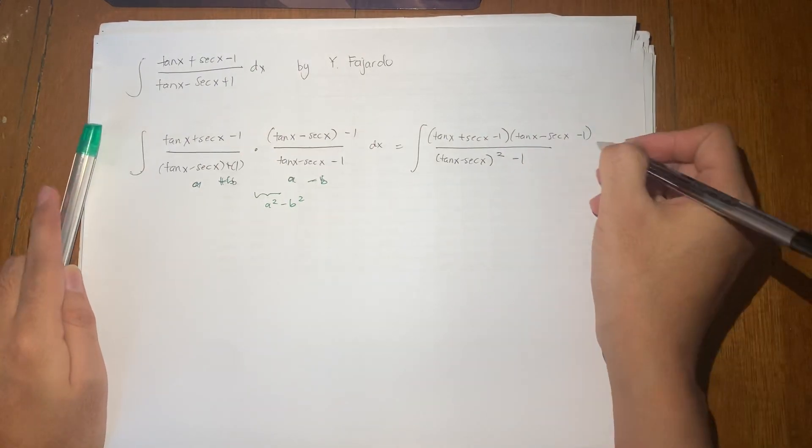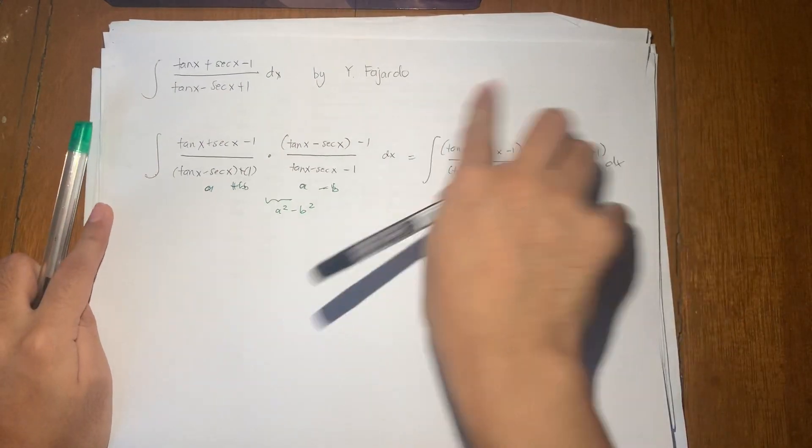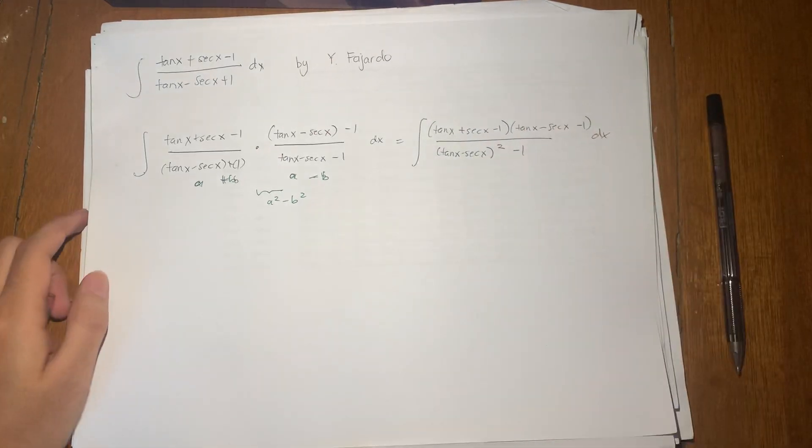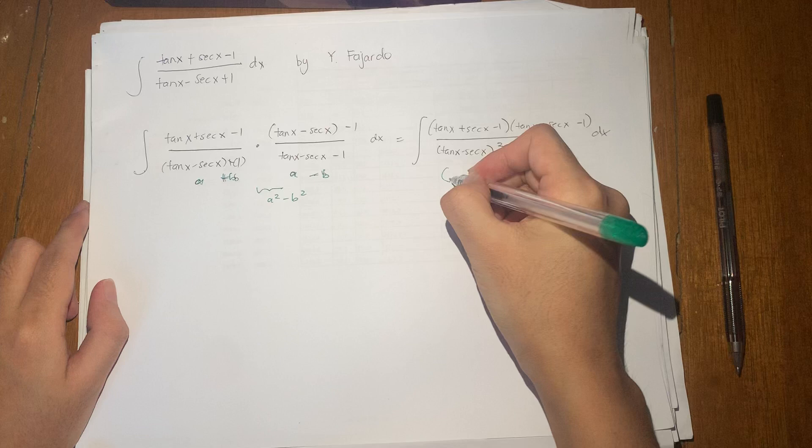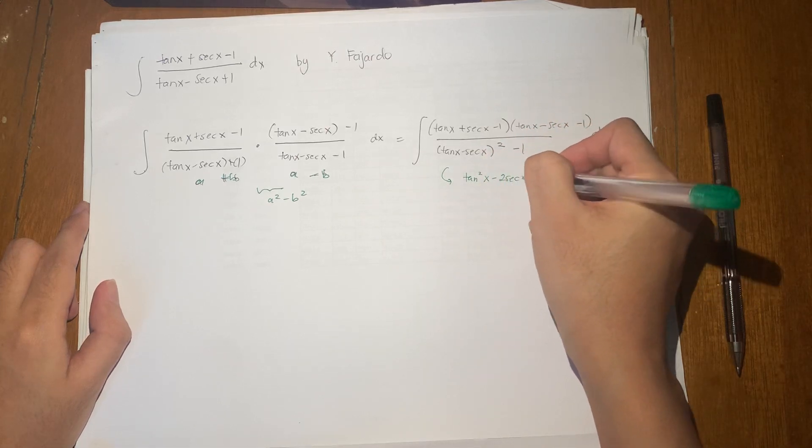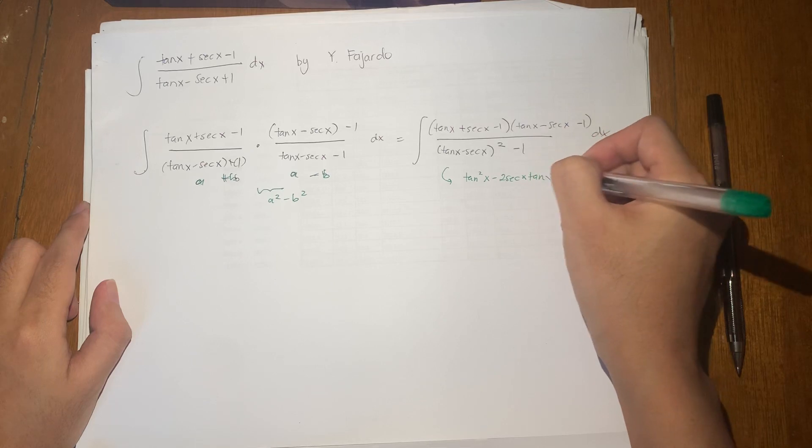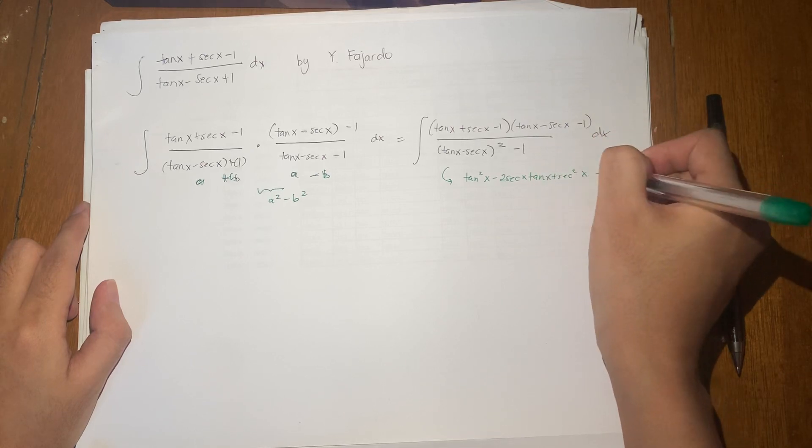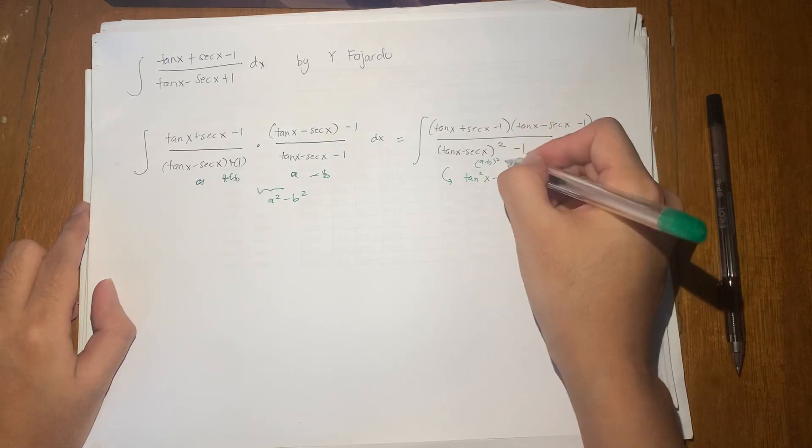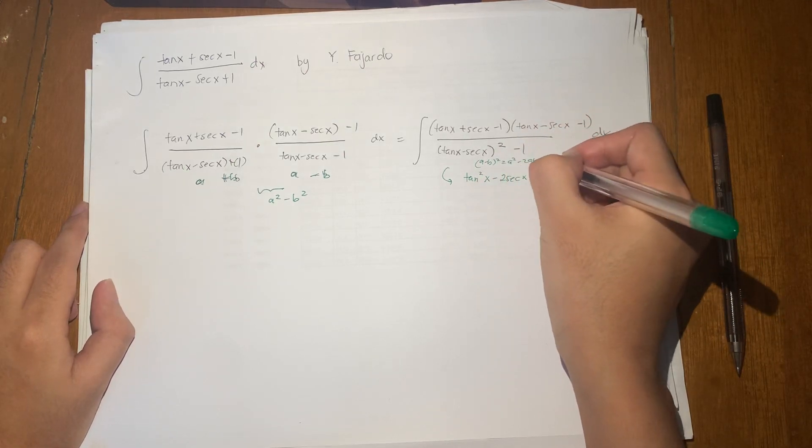Now what's left to do is to simplify this thing. Let's start with the denominator because it looks shorter. So this one becomes tan squared x minus 2 secant x tan x plus secant squared x minus 1, where this is a minus b squared. So a squared minus 2ab plus b squared.